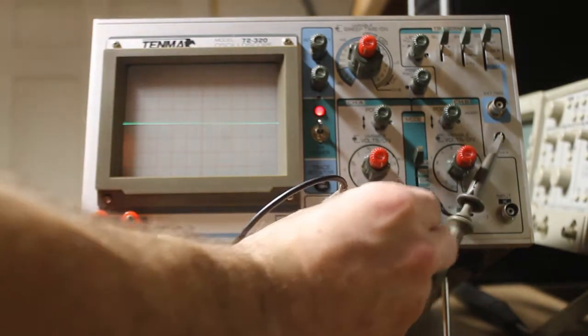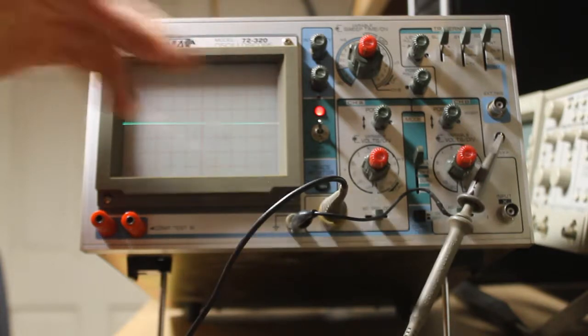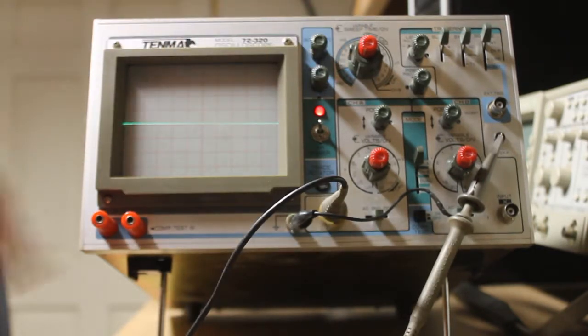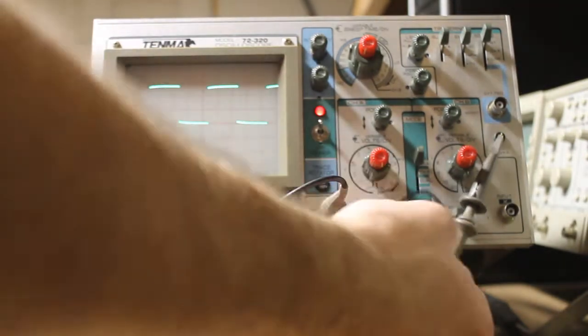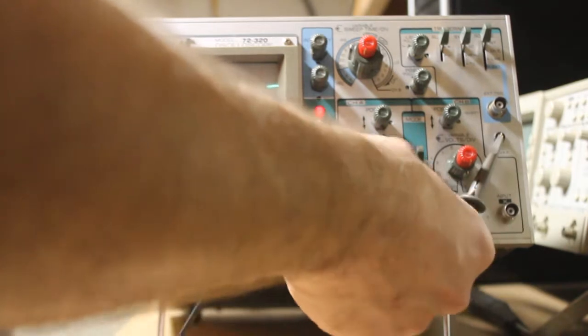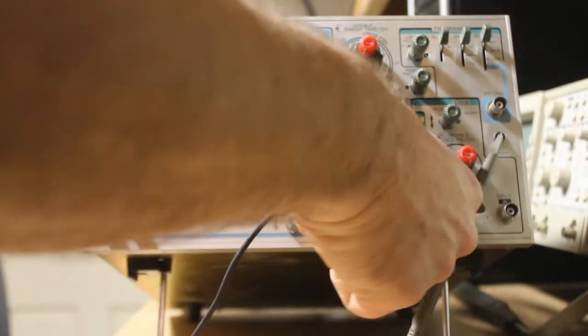Also, when you go to ground display, if your trace is not even across the center graticle, then you can use the trace rotation to correct that. Go ahead and go back to DC display. This is the one we were having trouble with earlier. And as you can see, it's stabilized quite a bit. AC works well as well.